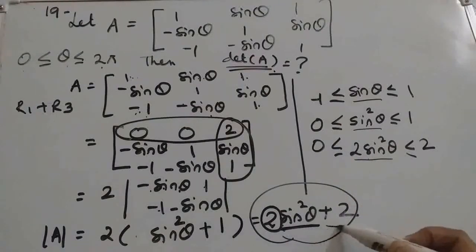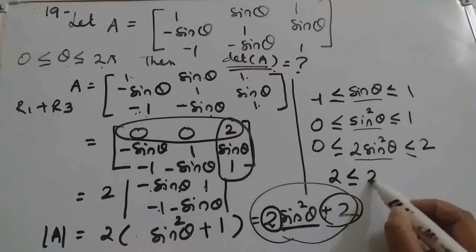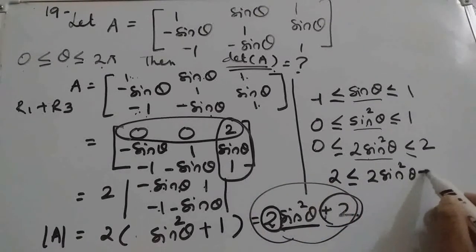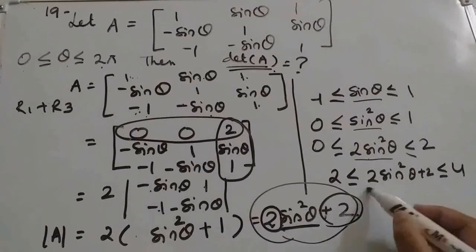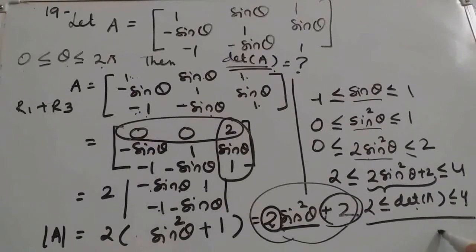Now what else we want? Plus 2. So we will add throughout with 2. So 2 plus 0 means 2. This will be plus 2. And 2 plus 2 is 4. So this is determinant of A. Determinant A value lies between 2 and 4.